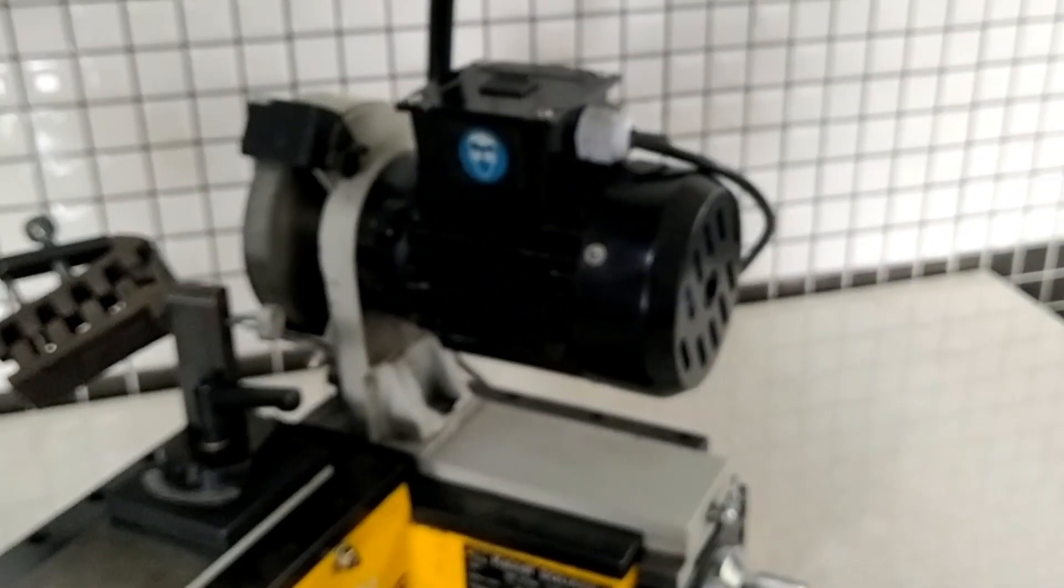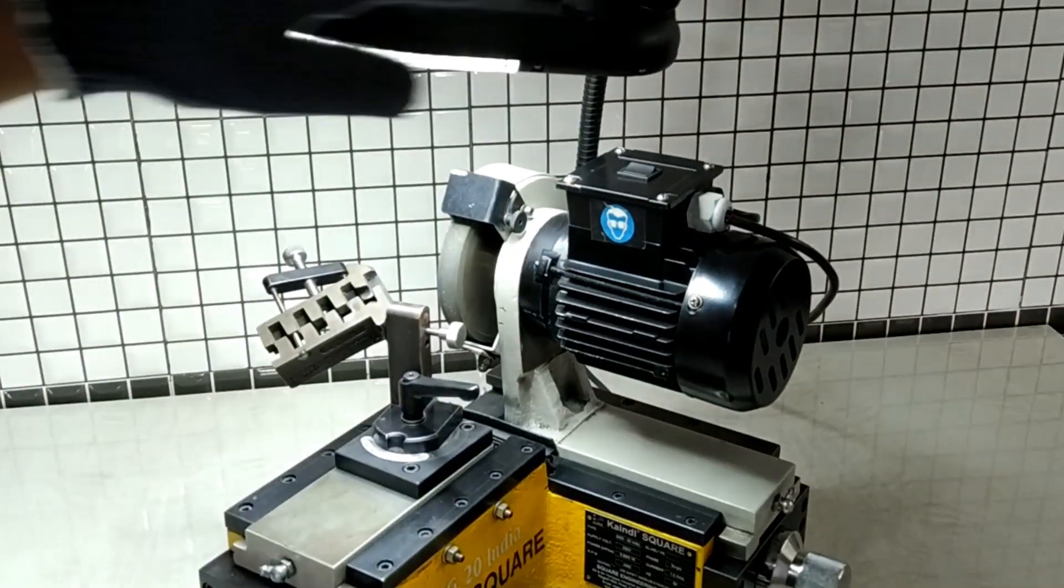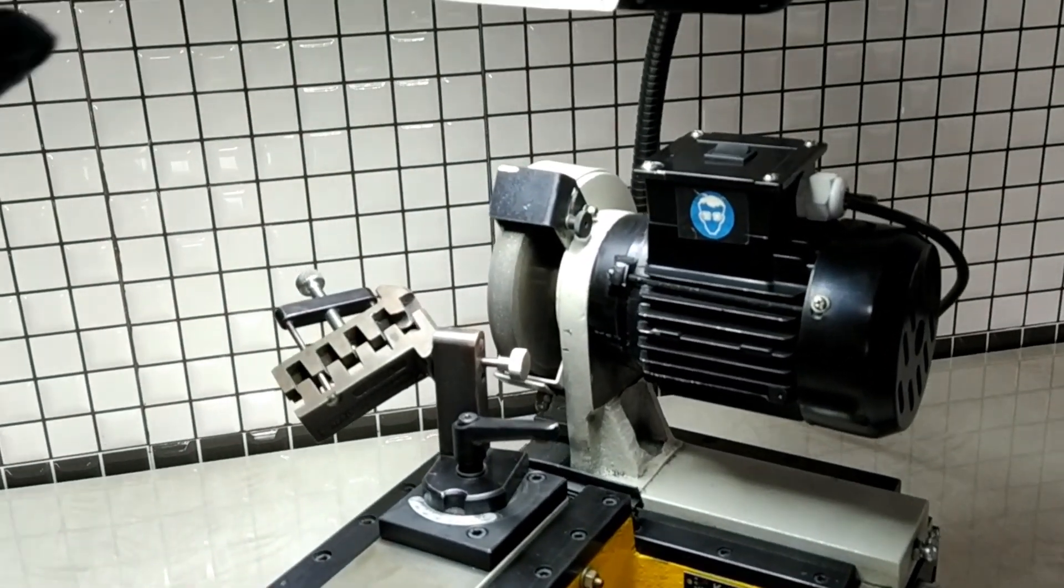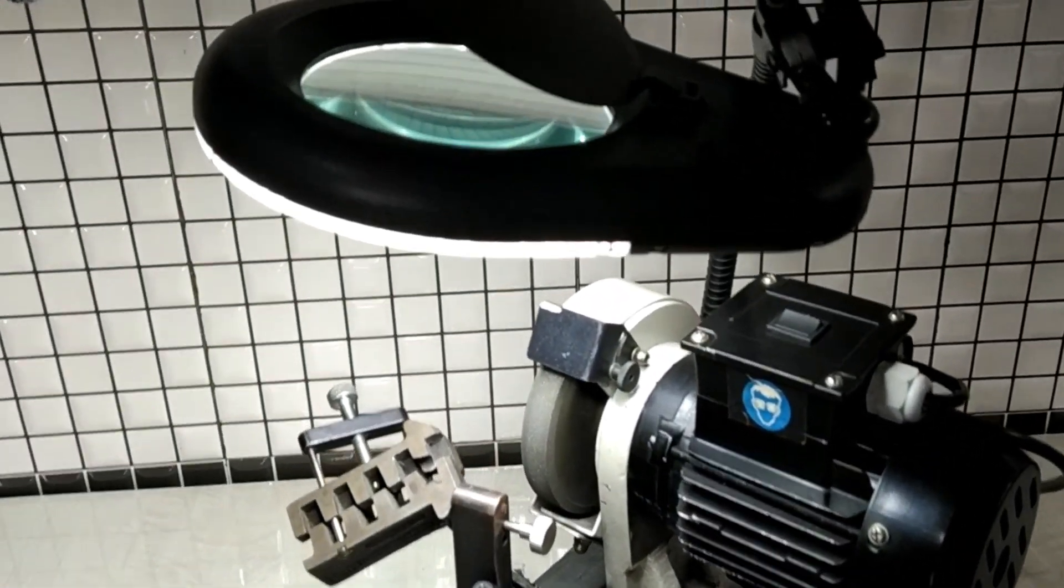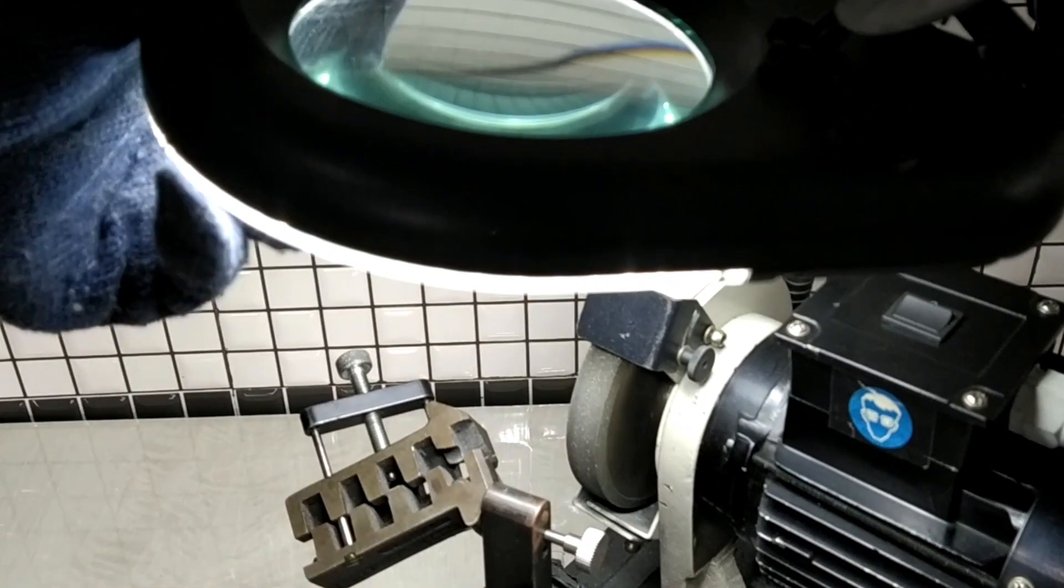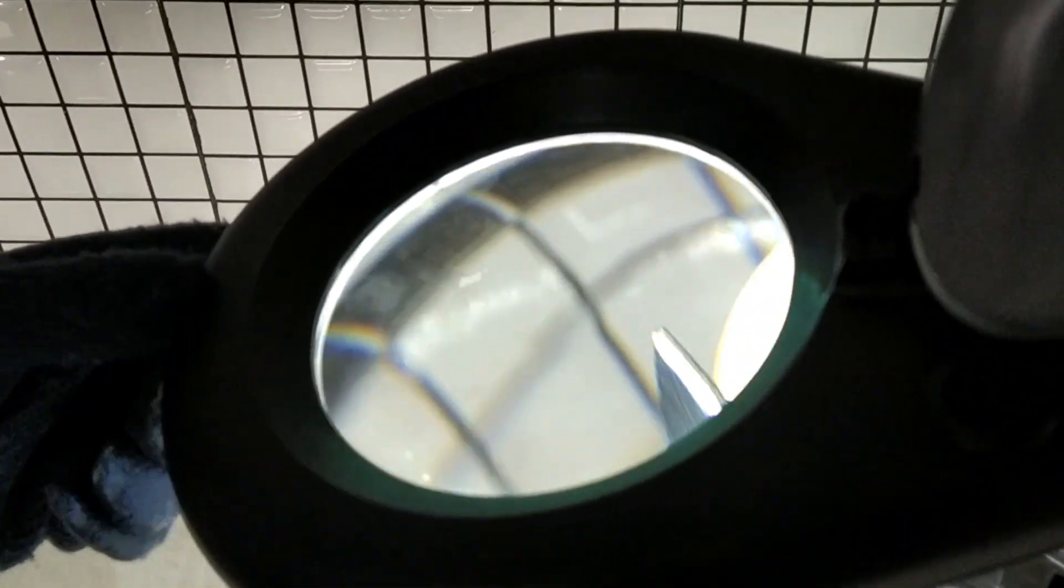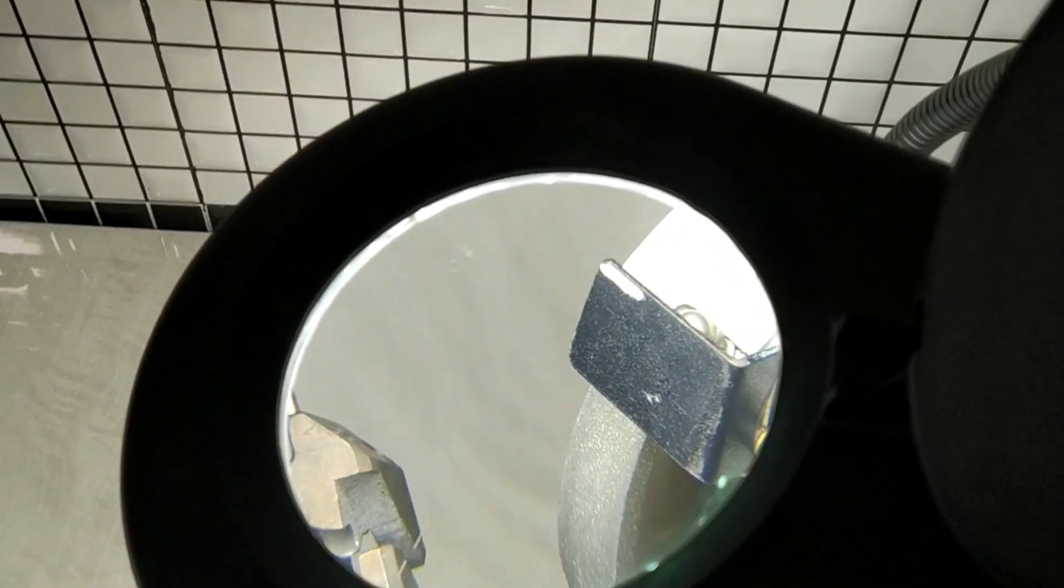Additional accessories are available and can be supplied on customer's request. For example, magnifying lamp. This accessory is used while resharpening small diameter drill bits. It is difficult for human eyes to see resharpening of small diameter drill bits like 2mm or 3mm. In such cases, it can be helpful.